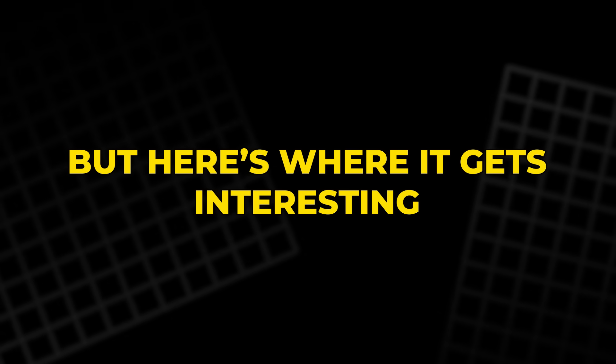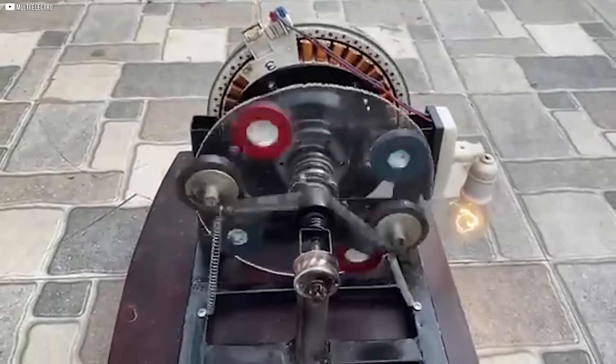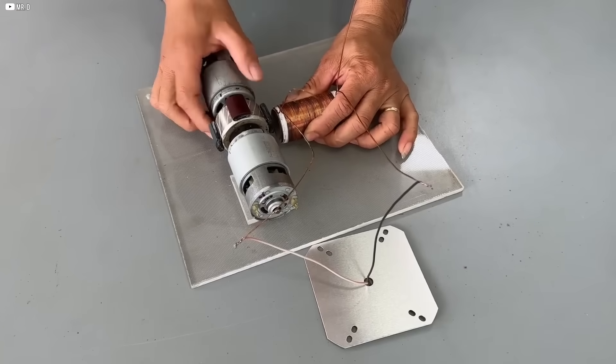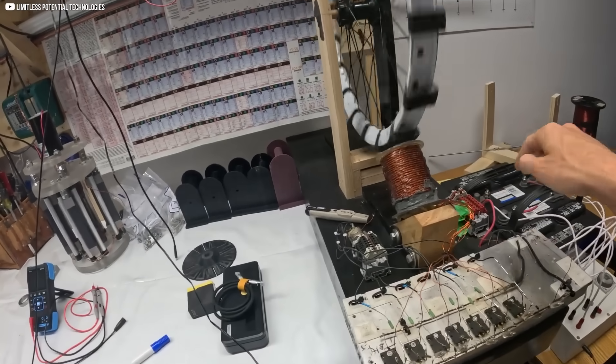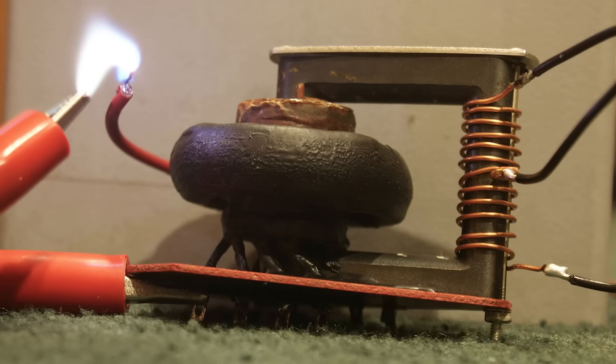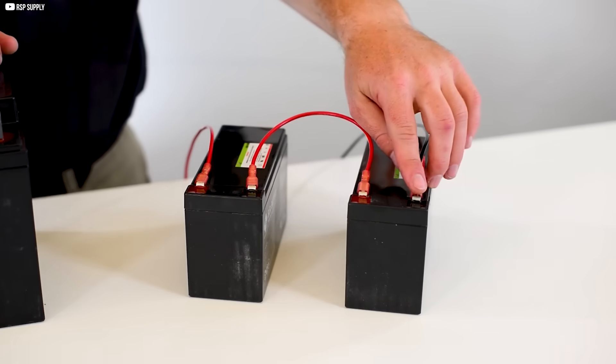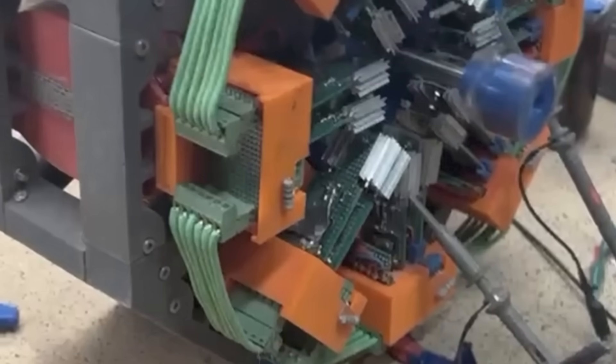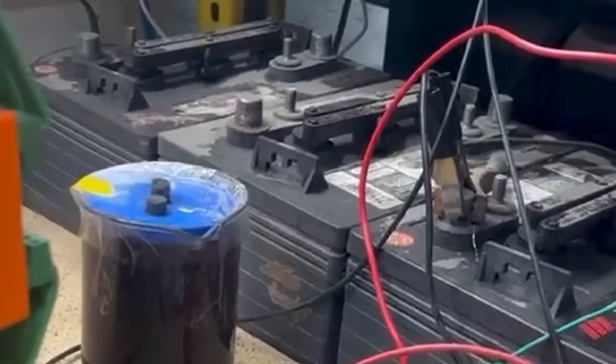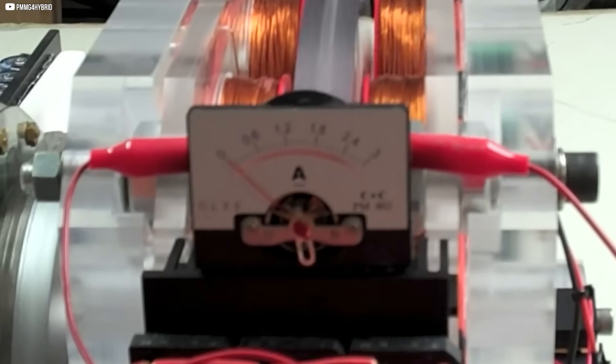But here's where it gets interesting. Instead of a steady flow of current, we pulse it. Quick, precise bursts of energy timed with the motion of the magnets. That pulse creates a temporary magnetic field that sets the rotor spinning. Then when the power cuts off, the magnetic field collapses. And that collapse sends out a sharp, high-voltage spike known as flyback energy. We don't let that energy go to waste. We capture it. By feeding that spike into a second battery bank, we're not just recycling energy, we're accessing something more, something beyond. The system starts giving back more than we put in. And that right there challenges everything we've been told about what's possible with energy.